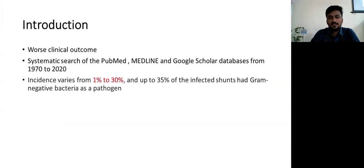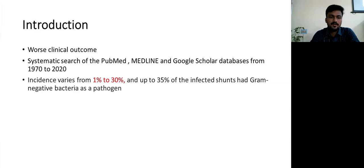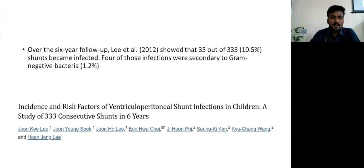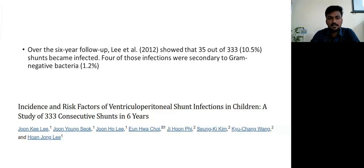Introduction: Gram-negative VP shunt infection has worse clinical outcome. Systematic search of PubMed, Medline, and Google Scholar databases from 1970 showed the incidence varies from 1 to 30%, and up to 35% of infected shunts had Gram-negative bacteria as a pathogen. One study on incidence and risk factors of VP shunt infections in children showed 33 patients had shunts, and among those with shunt-related infection, 4 showed Gram-negative bacteremia with an incidence of 1.2%.